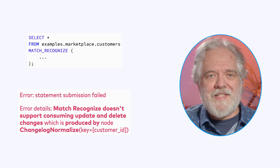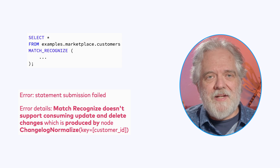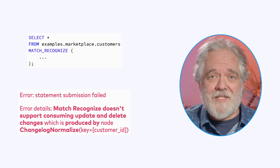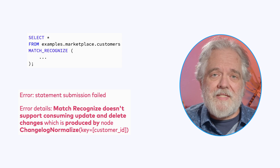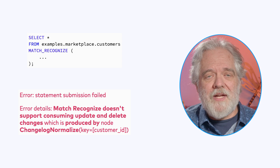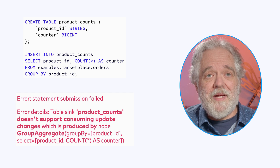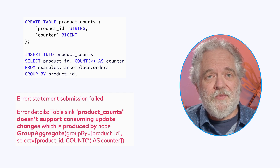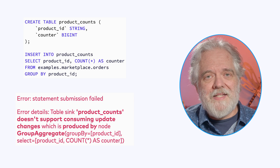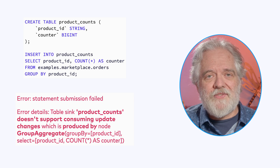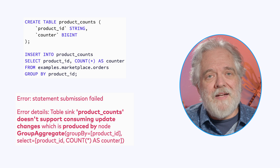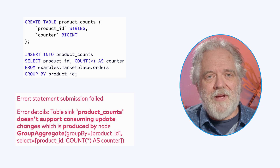As you experiment with Flink SQL, you may encounter errors like this one. In this particular case, this match recognize query isn't inherently impossible to execute. Instead, this error is simply the result of a missing feature. Flink SQL is, after all, an open source project, and the vision it embodies has yet to be fully realized. On the other hand, the planner is also throwing the same exception while trying to plan this straightforward grouped aggregation. In this case, the error is coming from the equivalent of trying to fit a square peg into a round hole — I've just set up a situation that doesn't quite make sense.